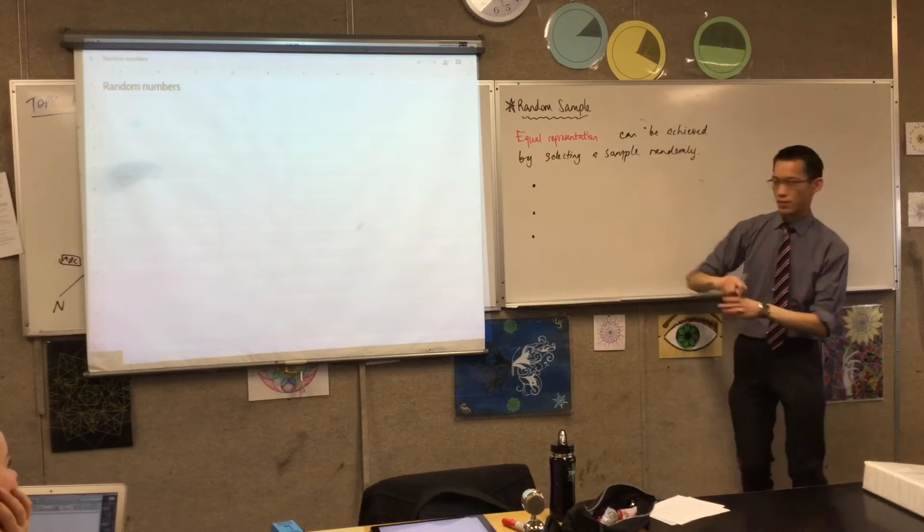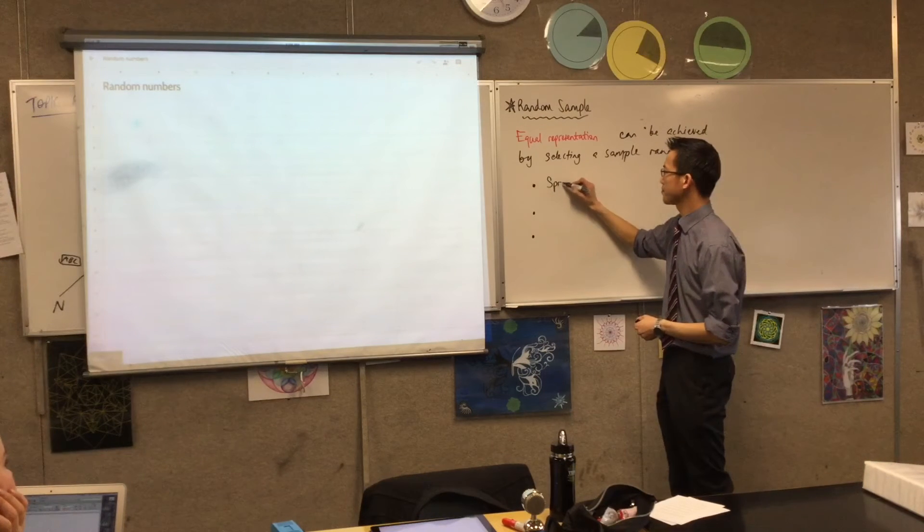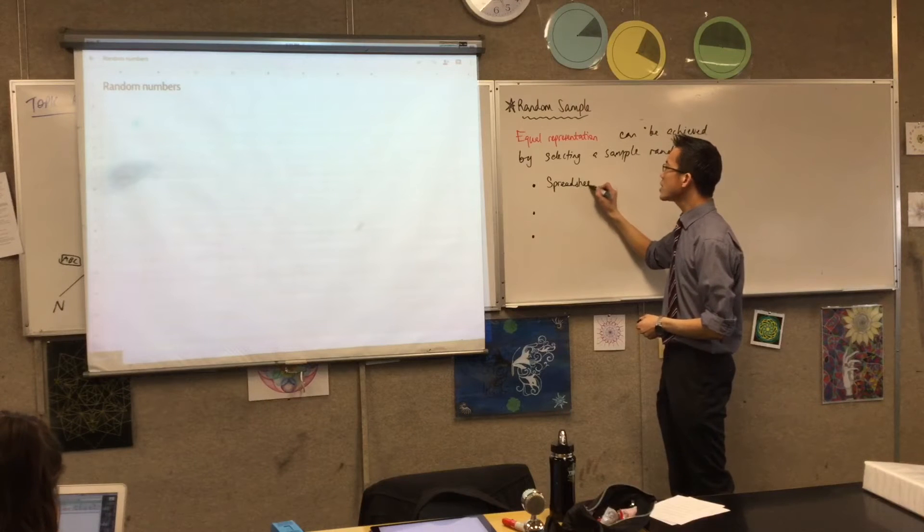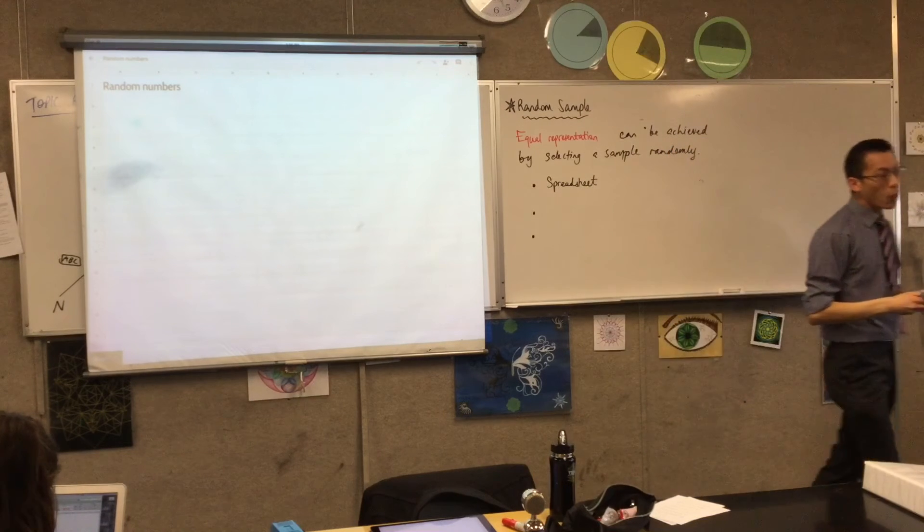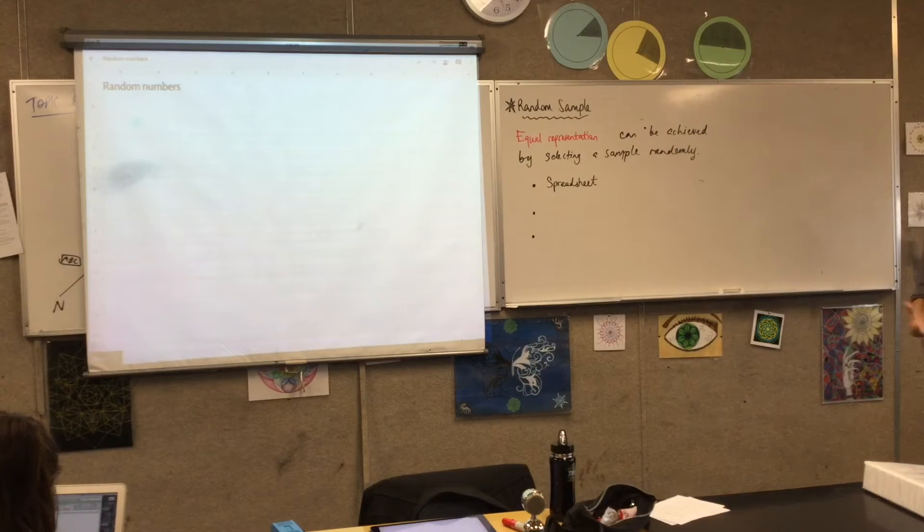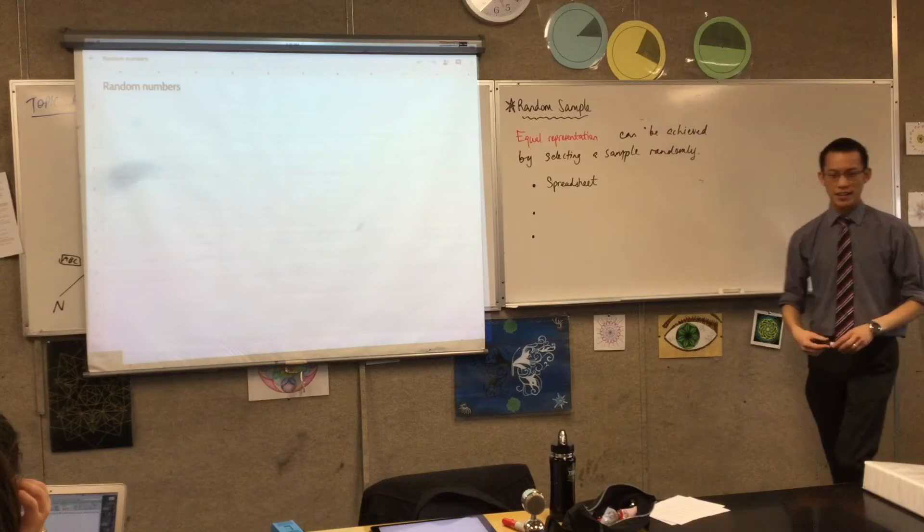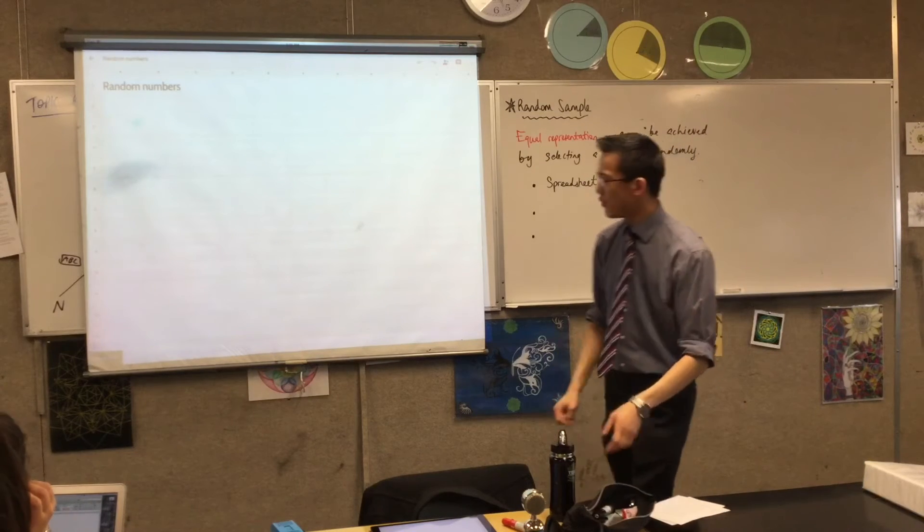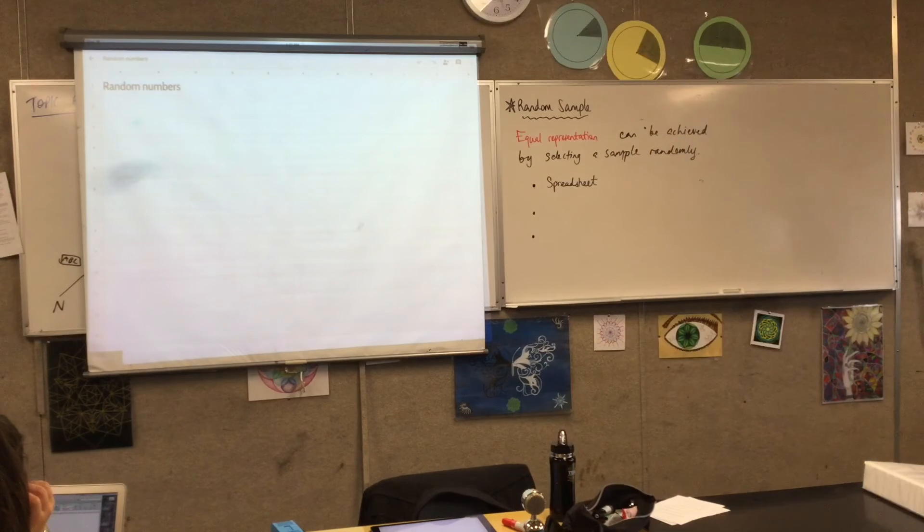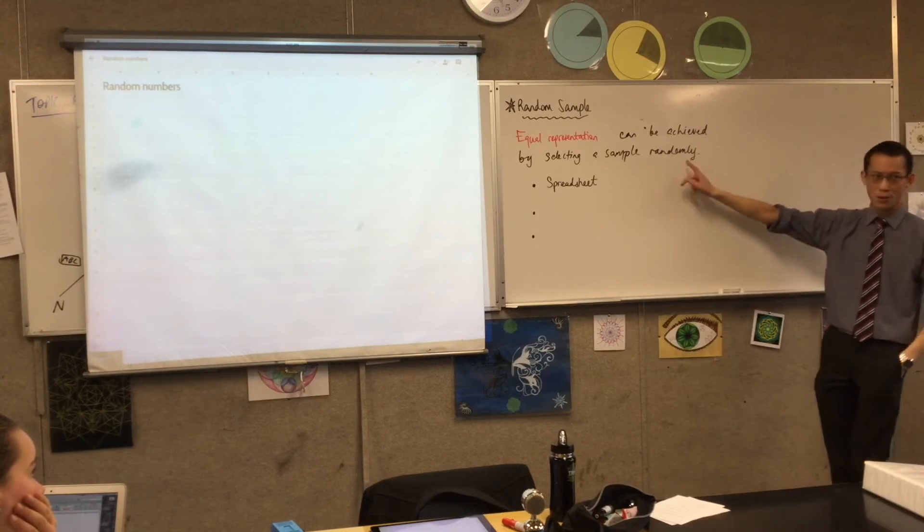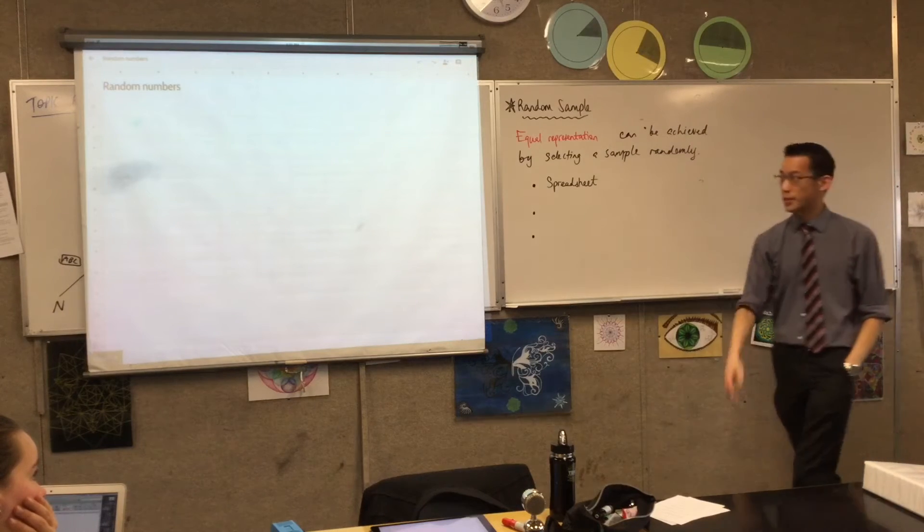So what each of these methods boils down to, and the first one is the spreadsheet, what each of these boils down to is, I want a series of numbers from 1 to 24, and then maybe, for instance, I'll just pick the first five. So first, I'll show you with a spreadsheet. Now, spreadsheets are great because even though you won't have access to them in an exam, if you actually want to do this practically out in the real world, spreadsheets are the quickest way to do it.